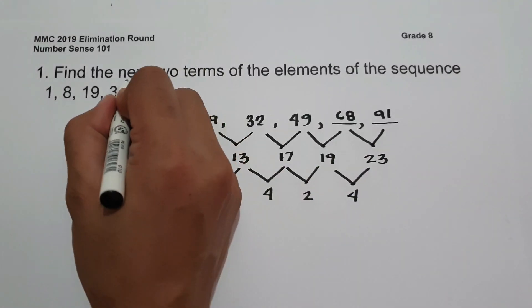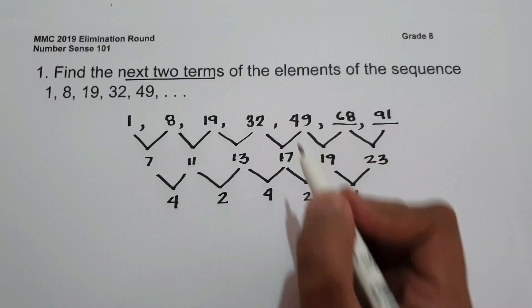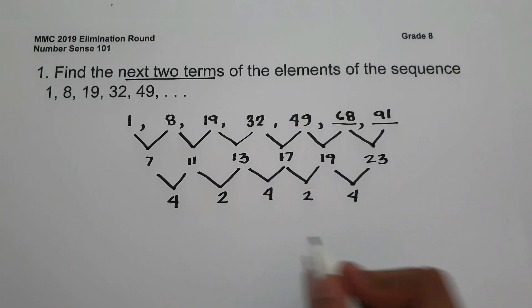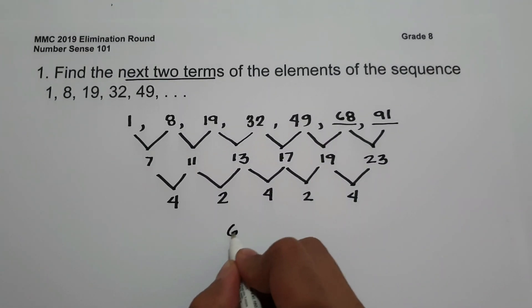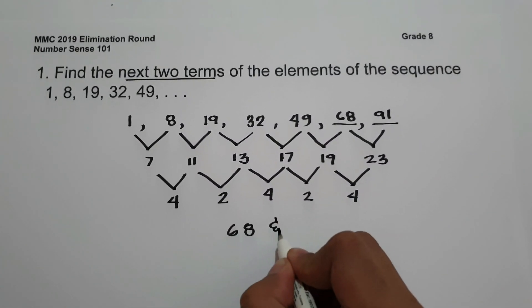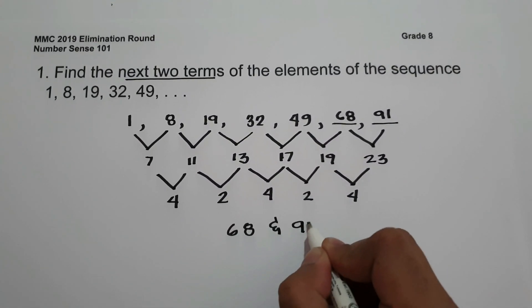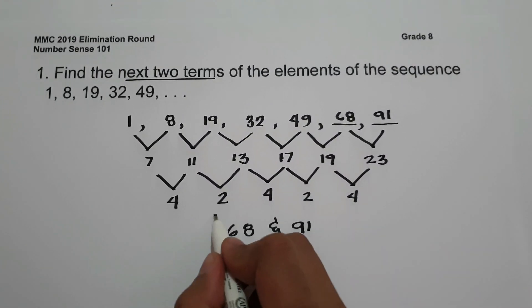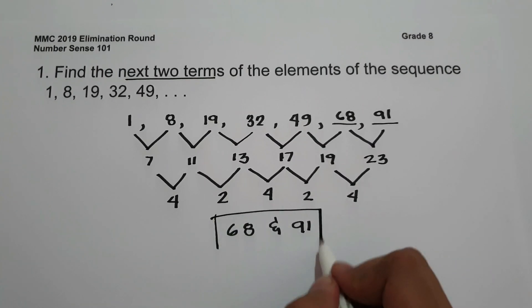So therefore, the next two terms in the given sequence will be 68 and 91. And this will be our answer.